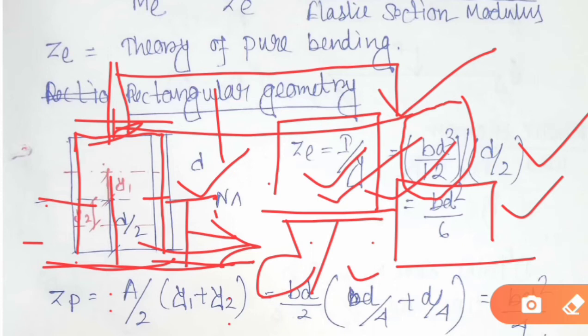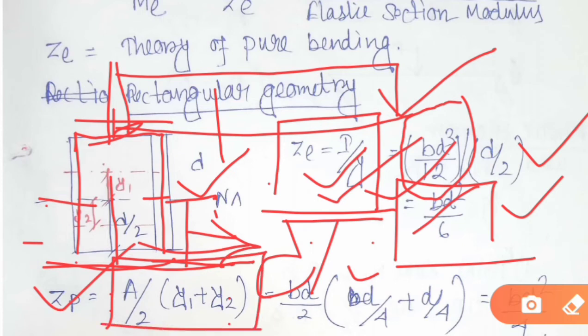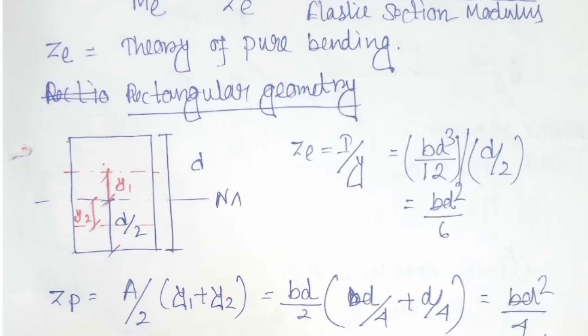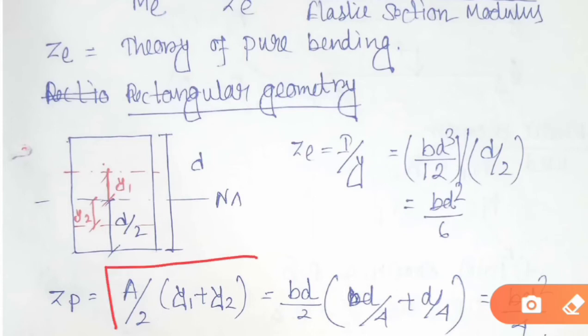Now we have to find out ZP. The formula to find ZP is: ZP = (A/2) × (Y1 + Y2). Here Y1 is the centroidal distance of the upper half area from the neutral axis, and Y2 is the centroidal distance of the lower half area from the neutral axis.